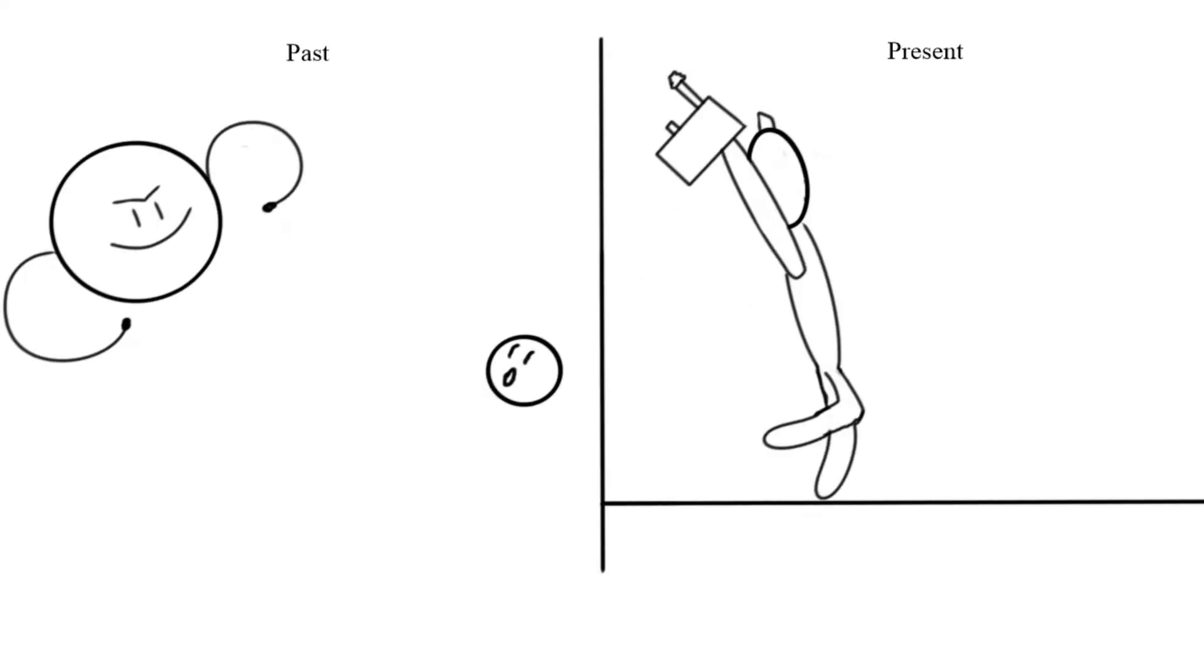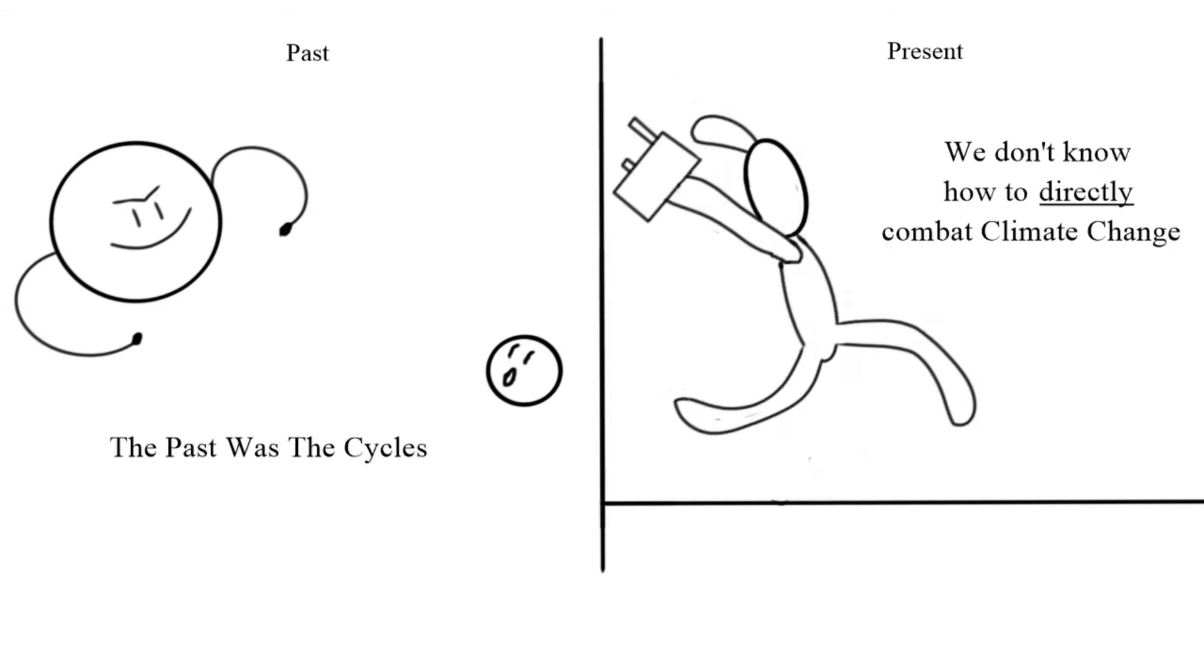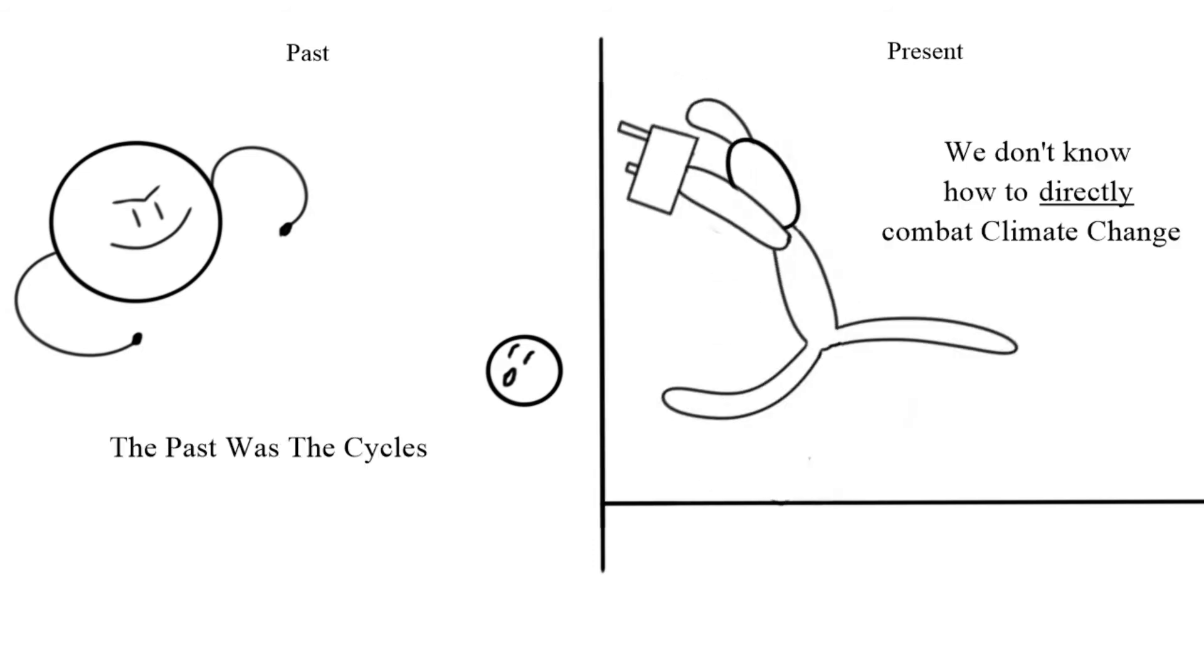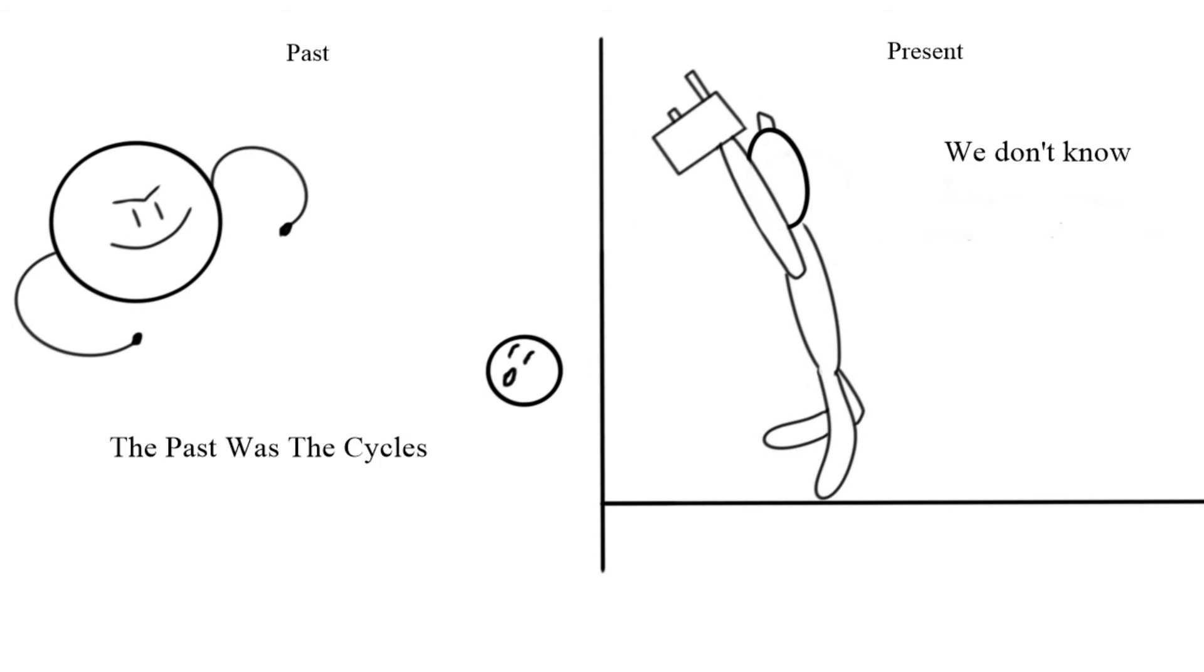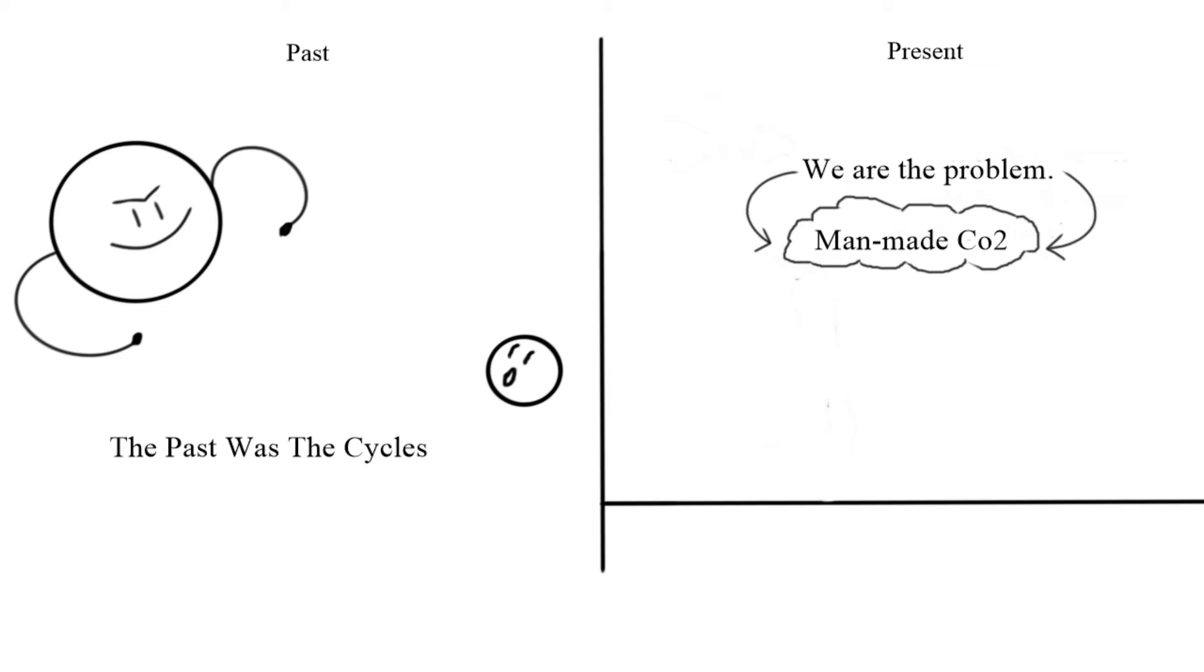As I said in my previous video, some people believe that the Earth is naturally warming. However, the Milankovitch Cycles are the cause of this past warming, but we are currently not warming because of them.